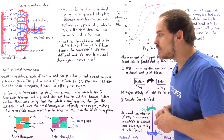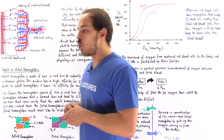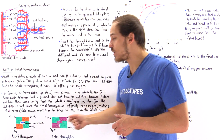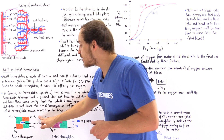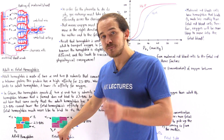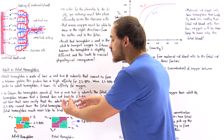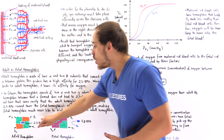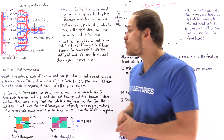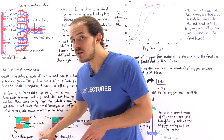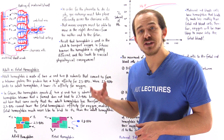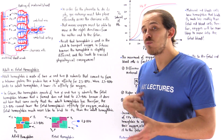Fetal hemoglobin also consists of four subunits — alpha-1 and alpha-2 — but instead of beta-1 and beta-2, it contains gamma-1 and gamma-2. When these four subunits form the fetal hemoglobin tetramer, there is no longer a cavity that can accommodate 2,3-BPG. So unlike adult hemoglobin, fetal hemoglobin does not bind 2,3-BPG in the presence of that molecule.